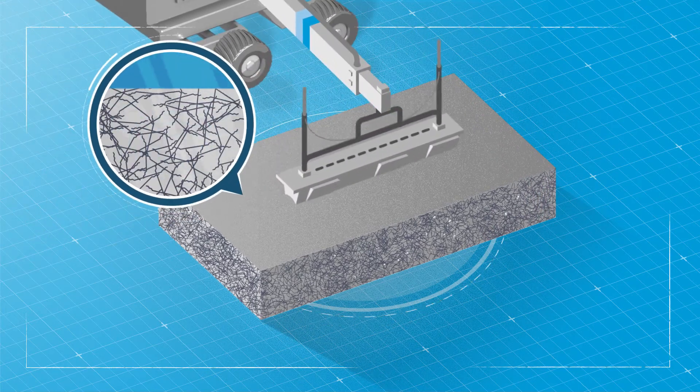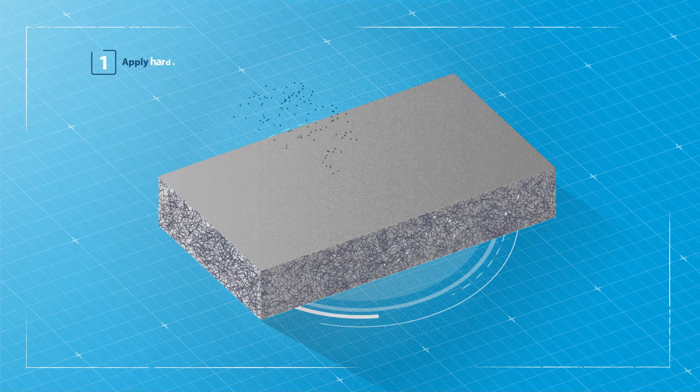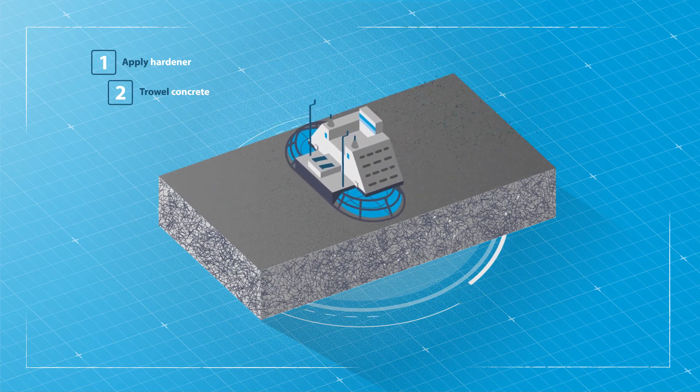Vibrate the concrete immediately and thoroughly after pouring to avoid fibers at the surface. Ensure hardness by applying a shake hardener and troweling until you get a mirror-like finish.